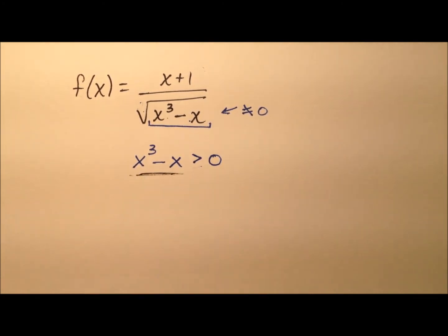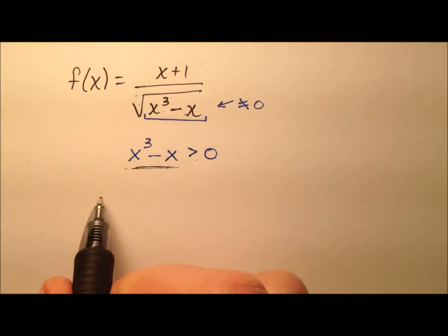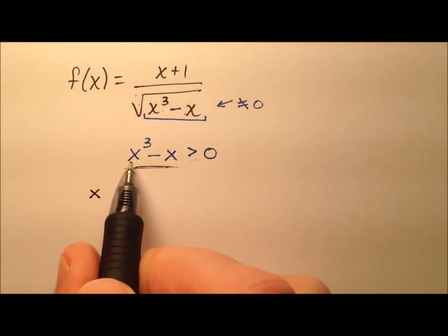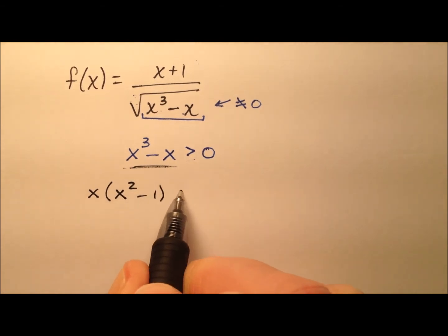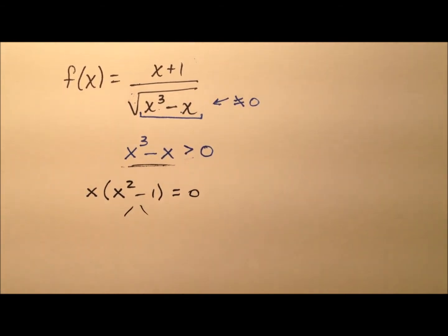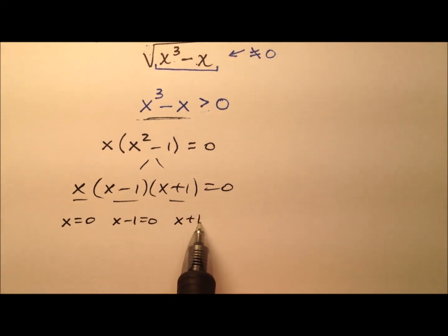So how do we solve this inequality? I'm going to start by factoring this left side and setting it equal to zero, because I need to find some critical numbers to work with. I can factor using the greatest common factor of x and have x squared minus one, then factor x squared minus one using difference of squares. Finally, I can use the zero property of multiplication and set all three factors equal to zero and solve.